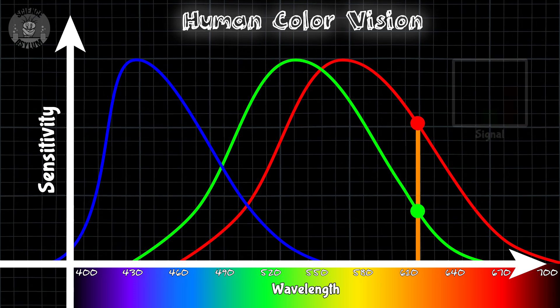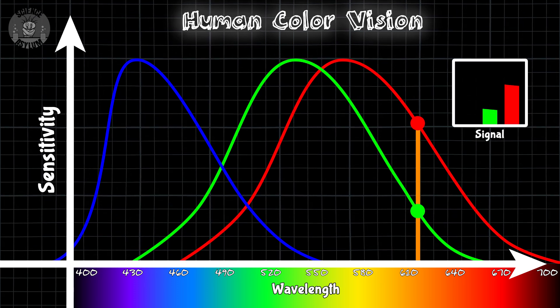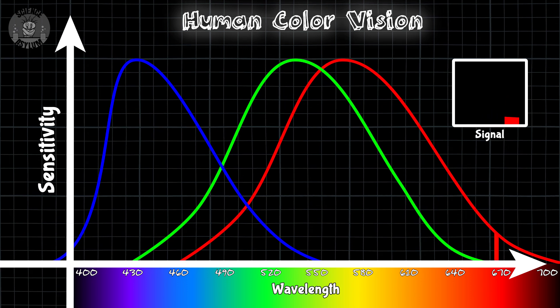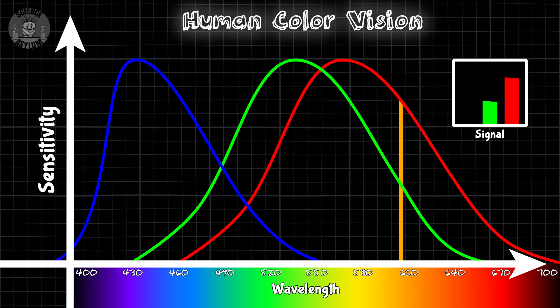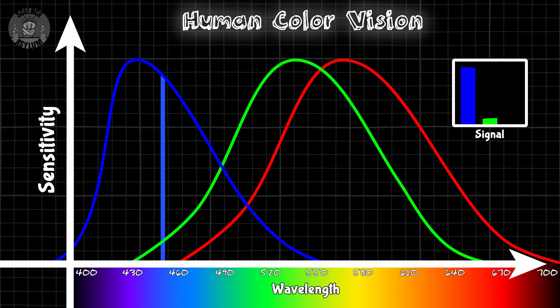That light will activate the red cones and the green cones by a very specific amount, which sends a unique mixed signal to the brain. No other color creates that signal combination. The same is true for every other color on the visible spectrum.